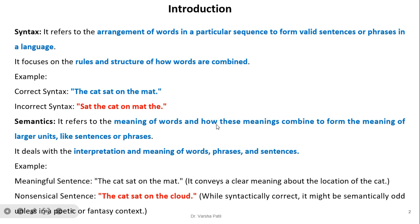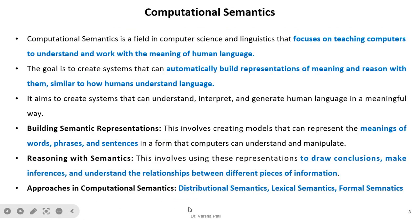Semantics is totally different from syntax. It refers to the meanings of words and how these meanings combine to form the meanings of larger units like sentences or phrases. It works at a higher level, dealing with interpretation and meaning. For example, 'the cat sat on the mat' is semantically correct, but 'the cat sat on the cloud,' while syntactically correct, is semantically odd unless in a poetic or fantasy context.